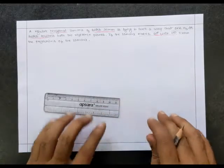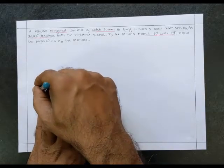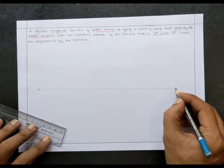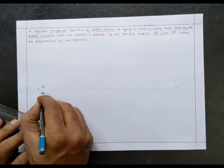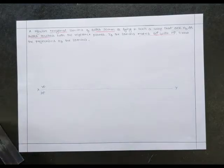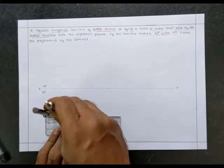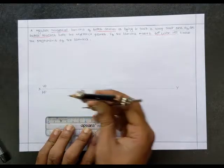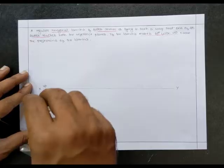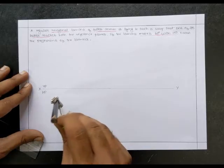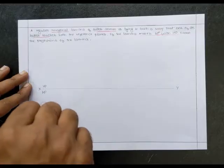Let us draw the XY line first in order to solve the problem. This is X, this is Y — vertical plane and horizontal plane. To construct a regular hexagon, one of the simplest methods is constructing a circle with radius equal to the side length, that is 30 millimeter. I am constructing a very thin circle — be careful, the circle should be very very thin.